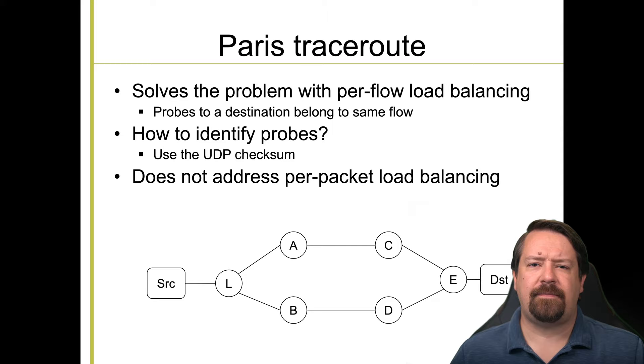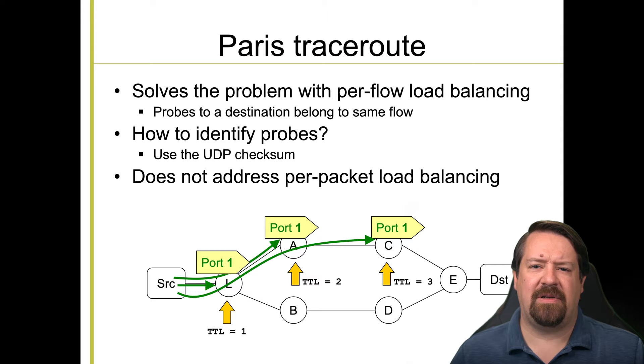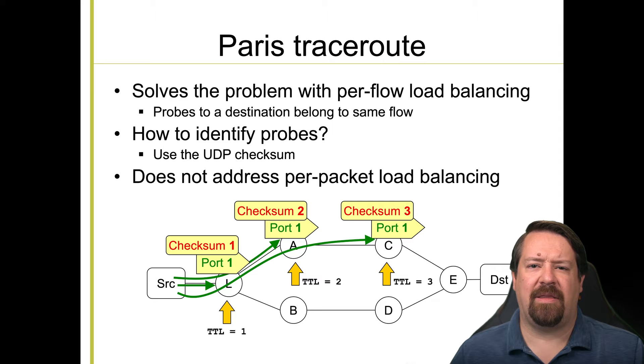So now when we have flow based load balancing, our tracerout probes will all use the same destination port number, doesn't have to be port one. And so they will all follow the same leg of the load balanced path. The checksum instead will be manipulated to yield the sequence number that tracerout needs to put the results back in order. But the checksum is not used for load balancing. So it won't cause the problem we had with traditional tracerout.